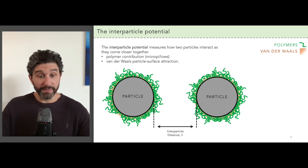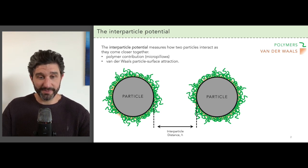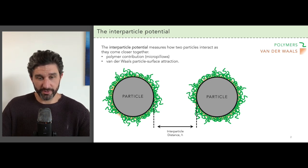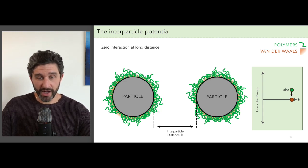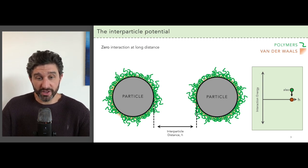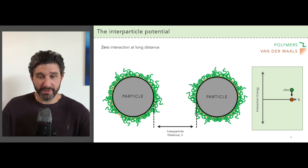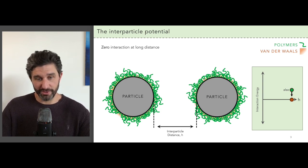This interaction is the micropillow effect. It's repulsive because the polymers don't want to be intertwined. To get a clear sense of how this interparticle potential operates and why it serves as a good measure for understanding if flocculation will happen or not, we trace out the potential as we vary the distance between the two particles.